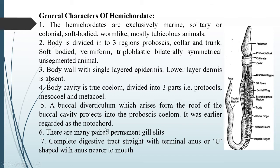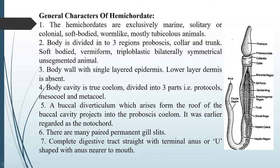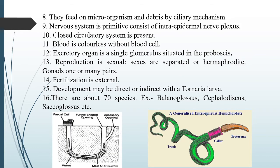There are many paired permanent gill slits. There is a branchial region where the gill pores are present. There is also a complete digestive tract with a terminal anus, starting from the mouth and ending at the anus. Since the animal is tubiculous, when it is in the tube, the anus and the mouth lie side by side — the anus is nearer to the mouth.